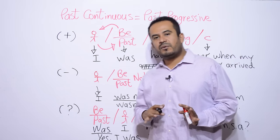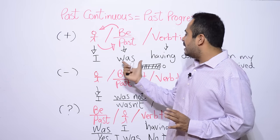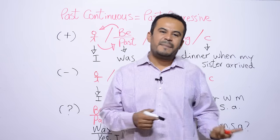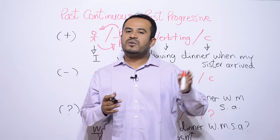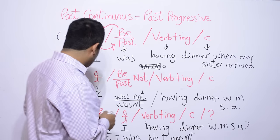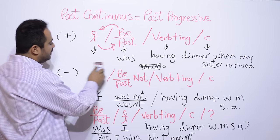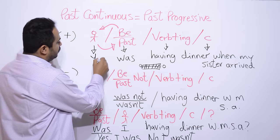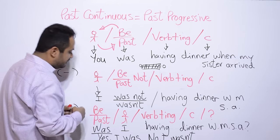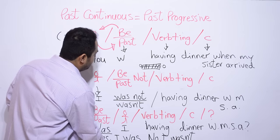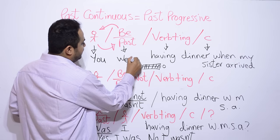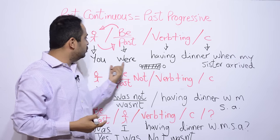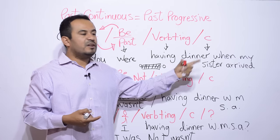Ya nada más voy a ponerles un ejemplo donde en lugar de ser I was, que sea donde se use were, porque were también es verbo to be en pasado. Pero were se utiliza para we, you, they. En el caso de were, vamos a cambiar de sujeto y ahora el sujeto va a ser you. Entonces va a decir tú estuviste. Vamos a cambiar was por were. Y va a quedar así. You were having dinner when my sister arrived. Tú estuviste cenando cuando mi hermana llegó.